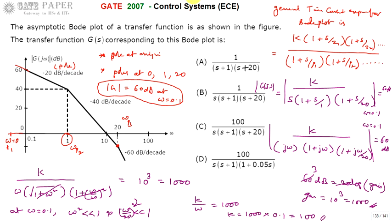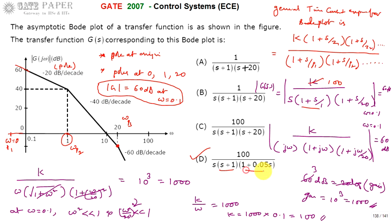So K equals 100. The final transfer function is 100 divided by S into (S + 1) into (1 + S/20), where S/20 is 0.05S. Therefore the right answer for this question is option D.